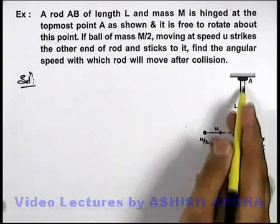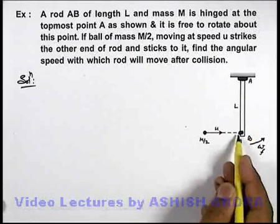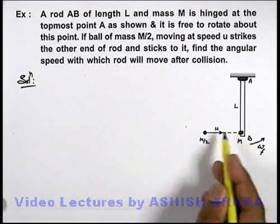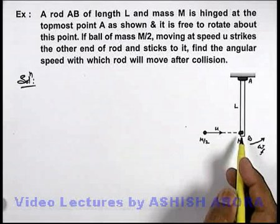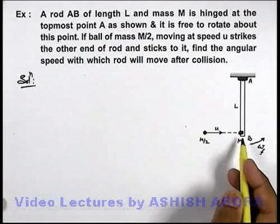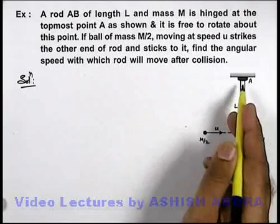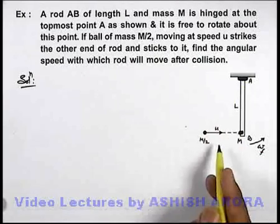In this situation, initially the rod was at rest; only the ball was moving. So after collision, as no external force is acting on the system, the angular momentum of this system will remain conserved about the point A, as net torque about point A is zero.